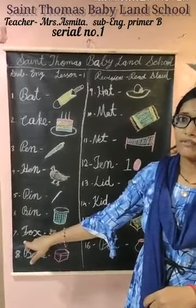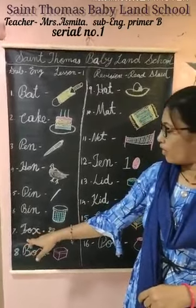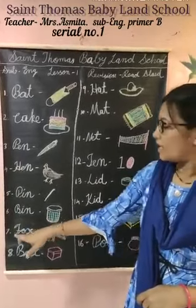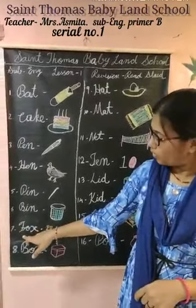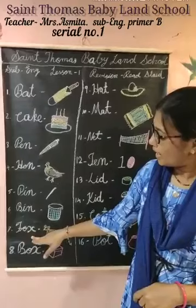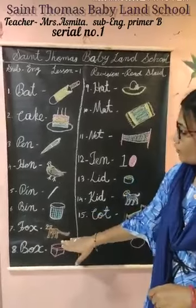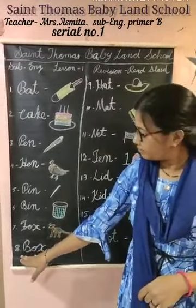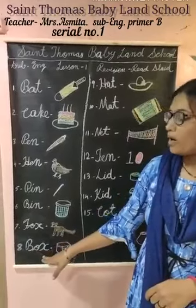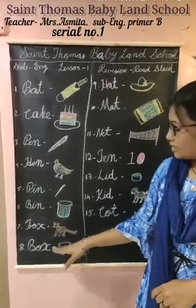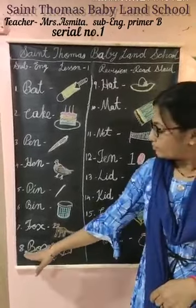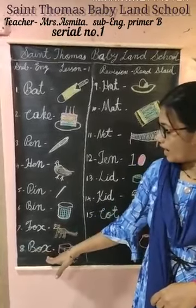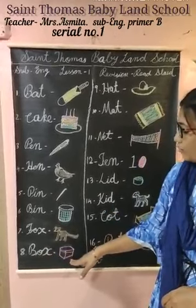Fox. F, O, X — fox. F, O, X — fox. The next one is box. B, O, X — box. B, O, X — box.